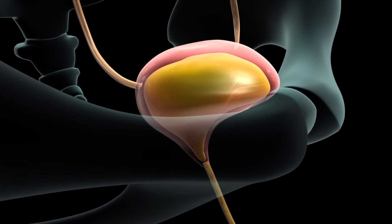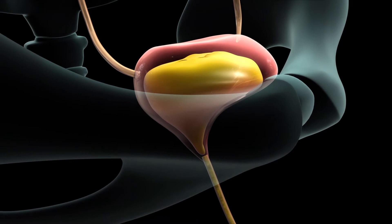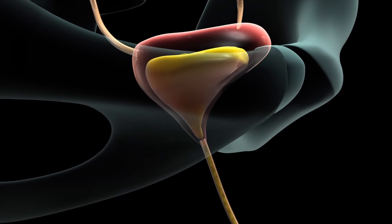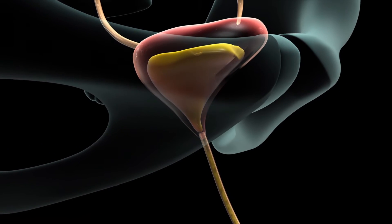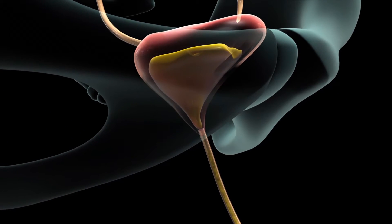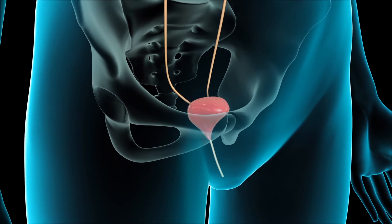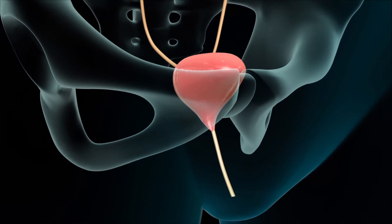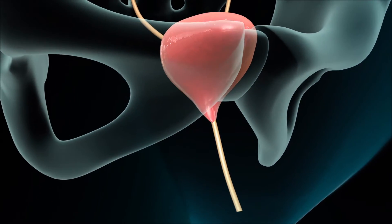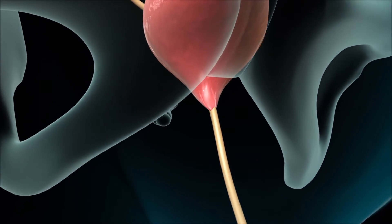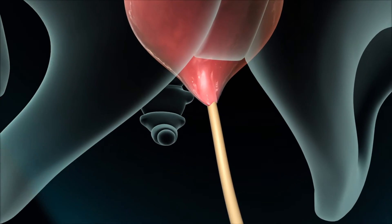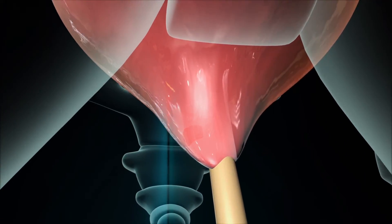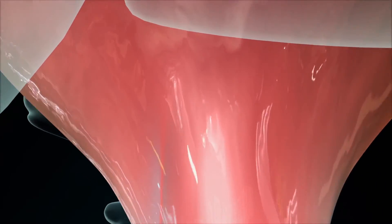During urination, urine leaves the bladder through the urethra and is expelled from the body. By allowing your doctor to view the interior of the urethra, bladder and the openings of the ureters, a cystoscopy may reveal the following conditions.